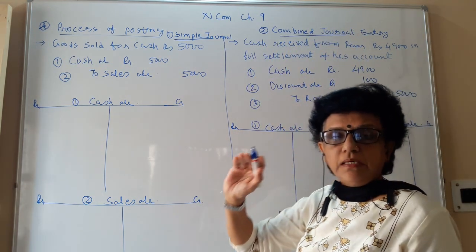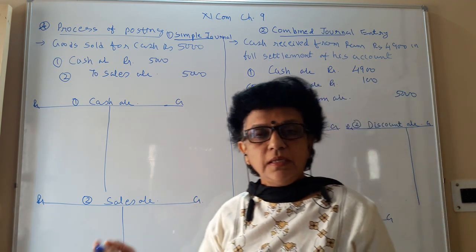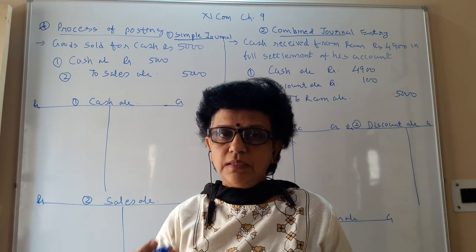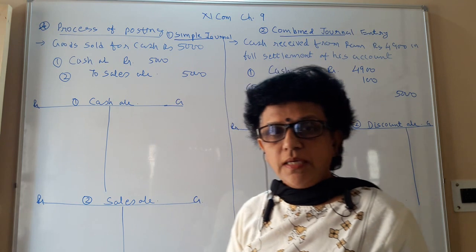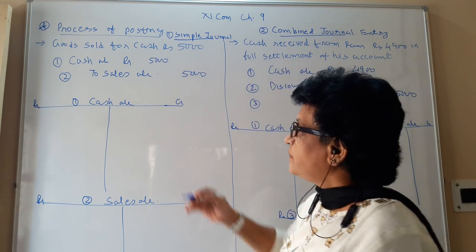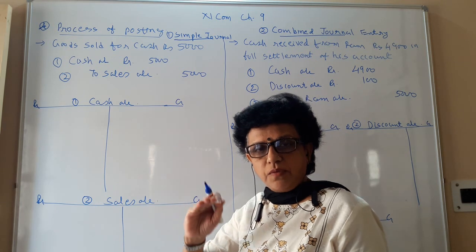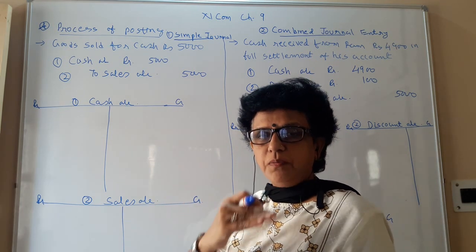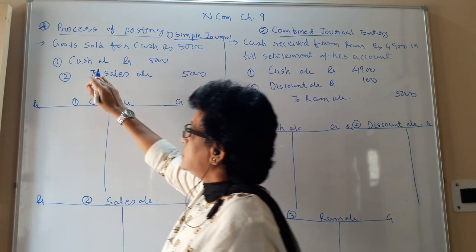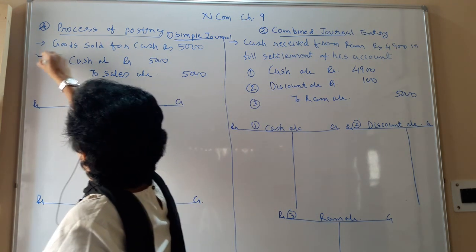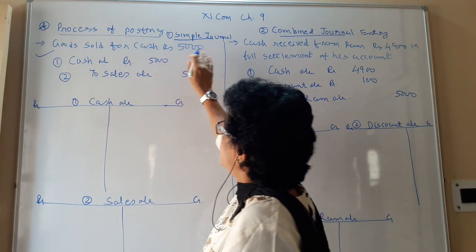You remember in our journal chapter we have learned there are two types of journals: simple and combined. So let us first try to understand the simple journal entry. We take one illustration to understand how the posting is to be done.